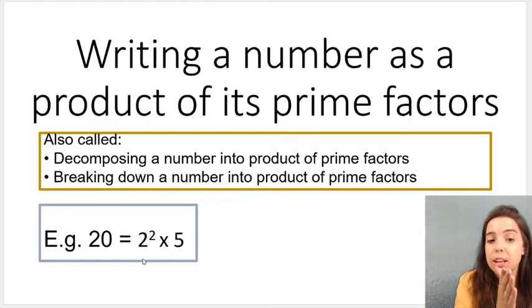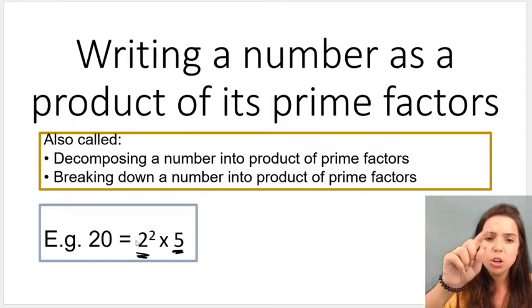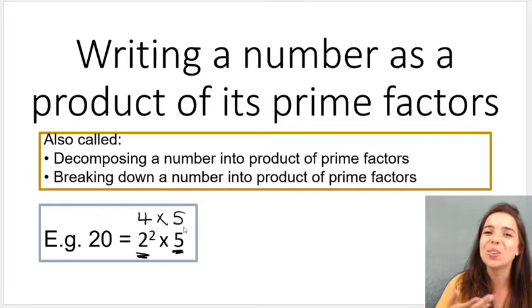If you take a look at that, you can see that 2 is a prime number, we know that. 2 is the lowest, the smallest prime number. 5 is a prime number. Why is it called product of its prime factors? 2 to the power of 2 is equal to 4. 4 times 5 is 20.